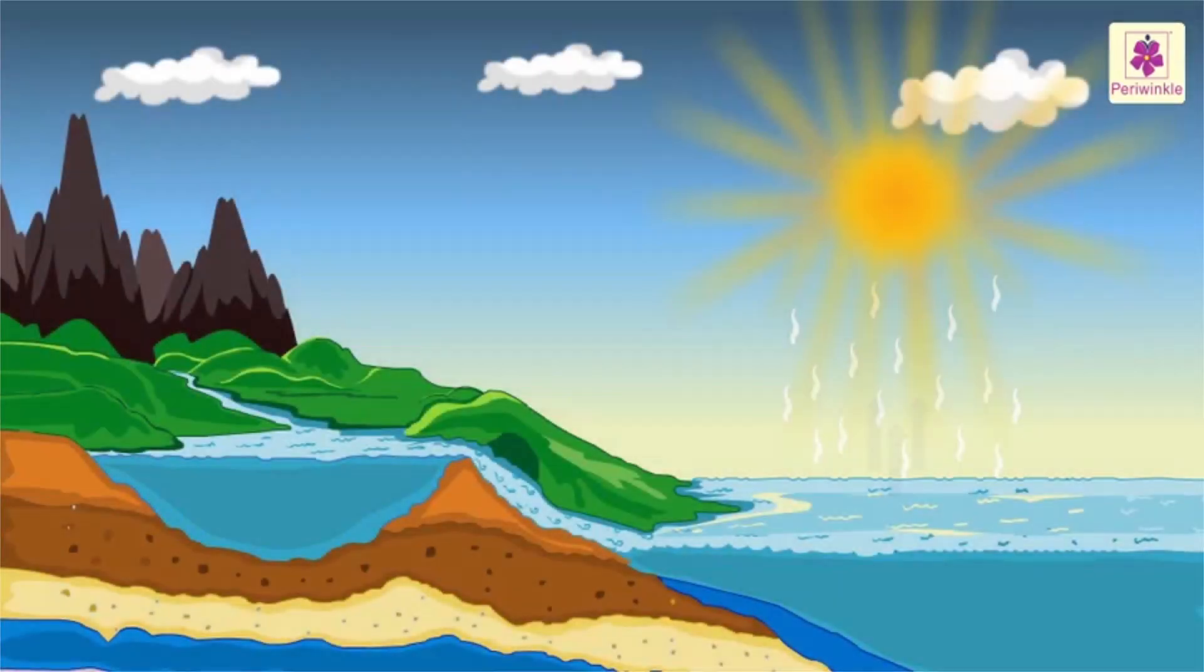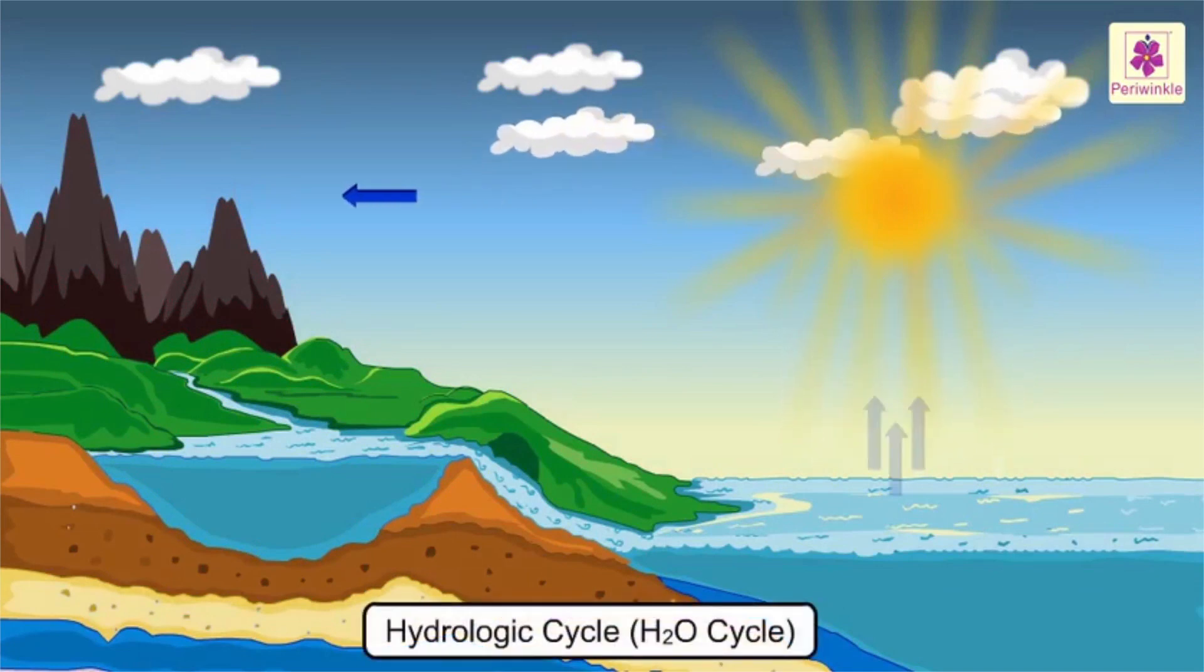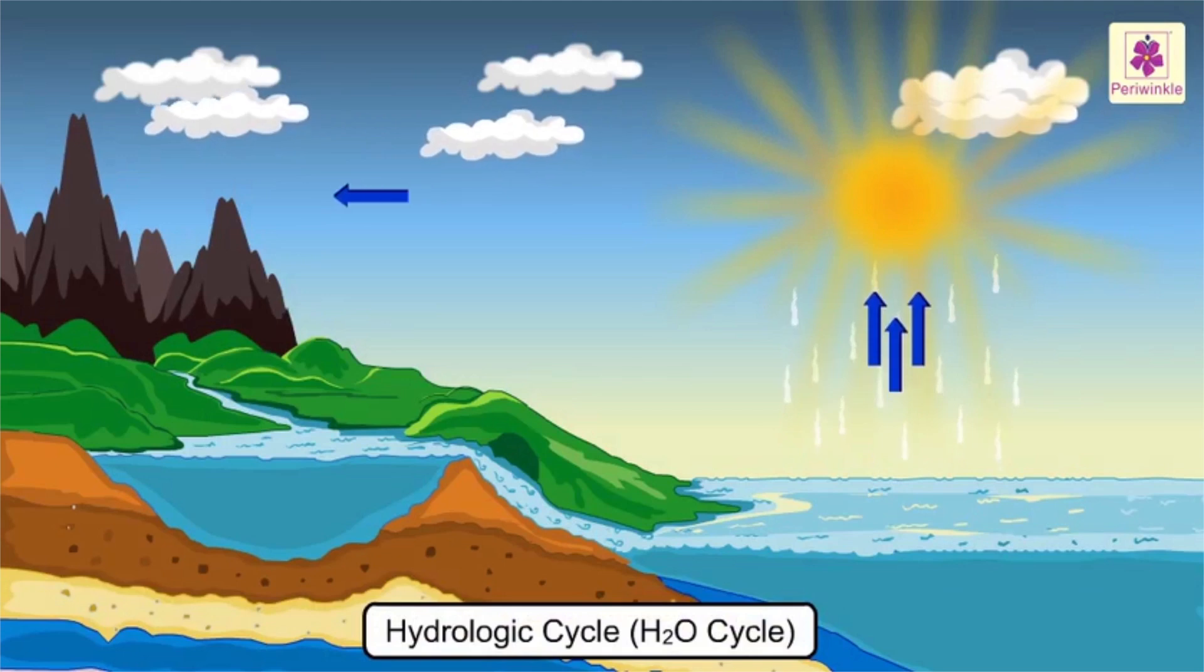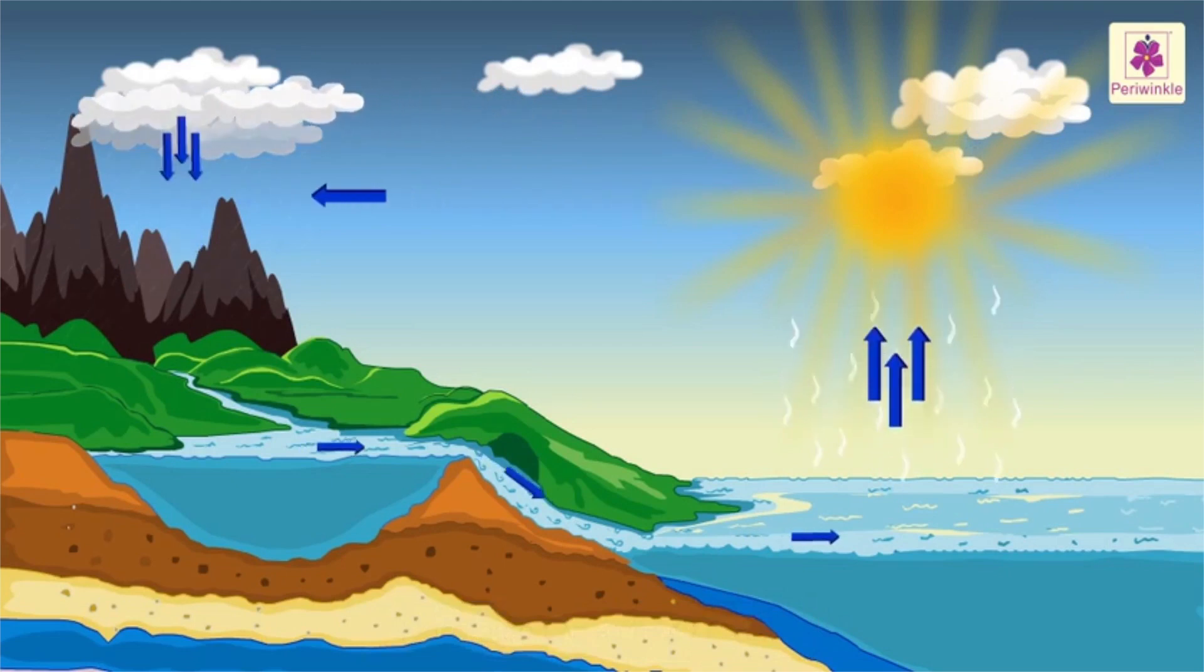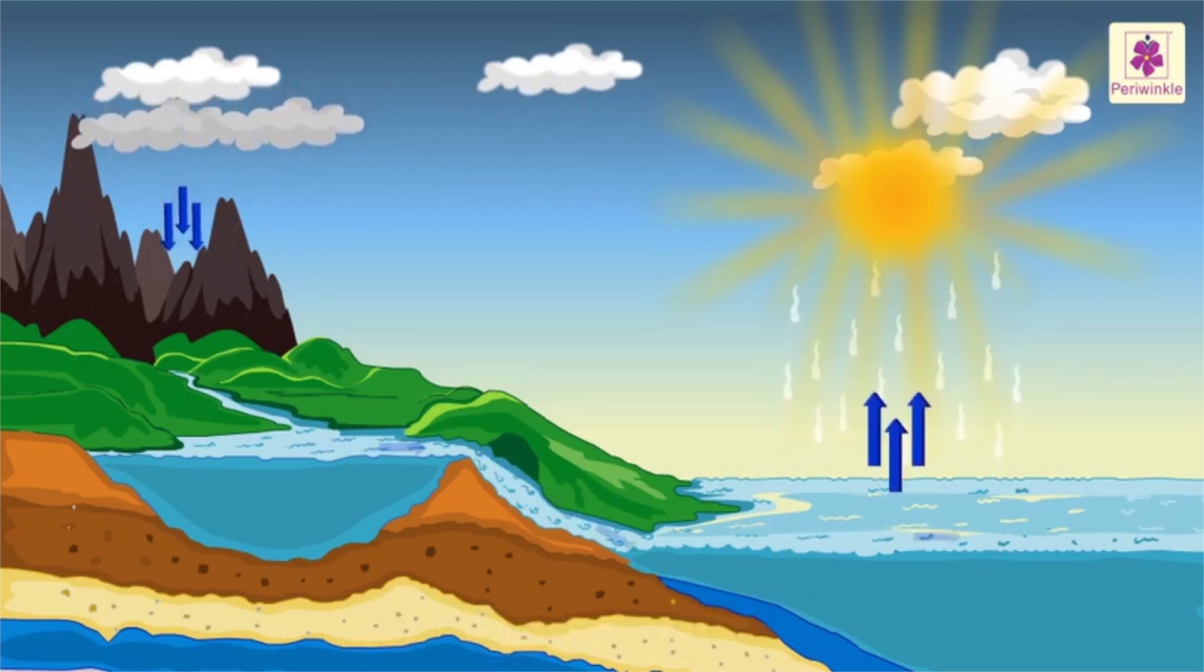Water cycle. It is also known as the hydrologic cycle or the H2O cycle. This cycle describes the continuous movement of water on, above, and below the surface of the earth.